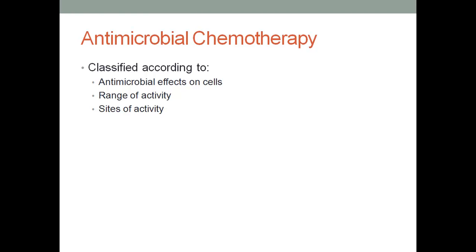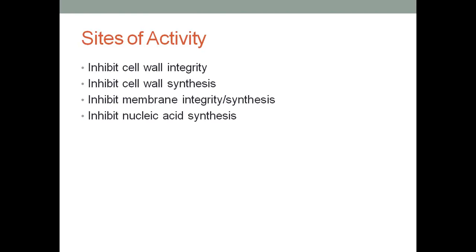Antimicrobial chemotherapy includes antifungals, antibiotics, and antiprotozoal drugs — all drugs used to destroy pathogens. We classify them based on the type of cells they act upon, their range of activity, and where they act. Broad and narrow spectrums matter; some medications cross the blood-brain barrier and some don't. If a patient has meningitis, we need medication that will cross the blood-brain barrier. We also look at sites of activity — what does it kill, where does it go, and how does it work — whether it ruptures the cell membrane or targets the mitochondria, preventing reproduction.